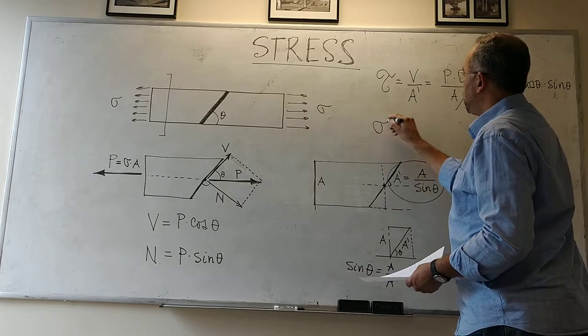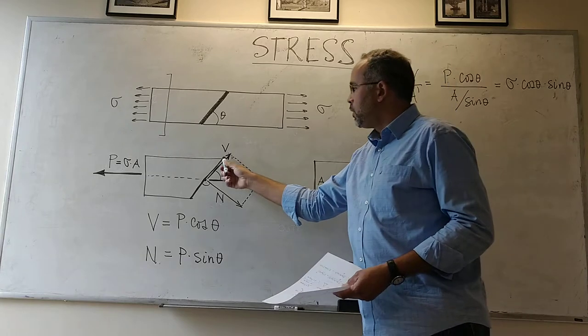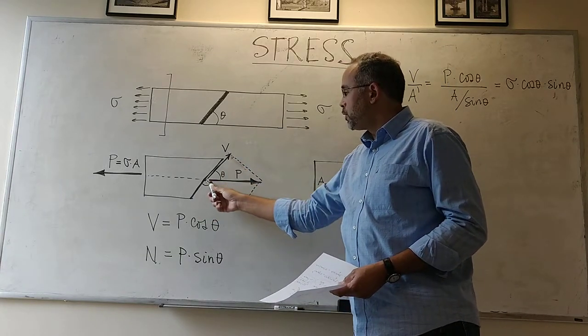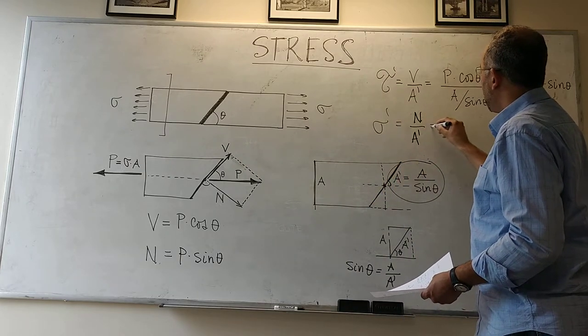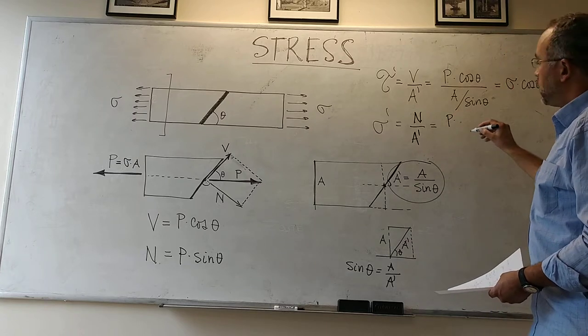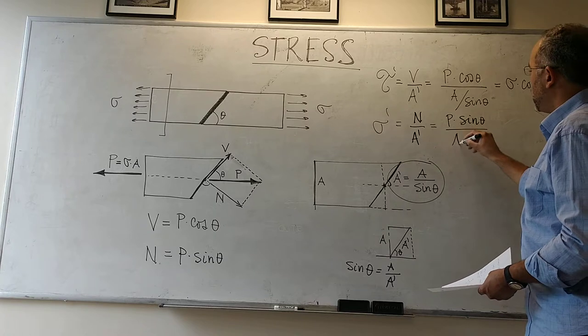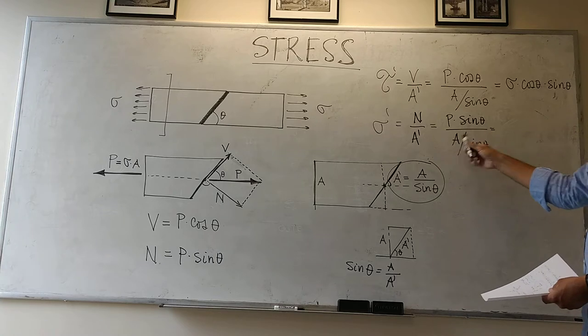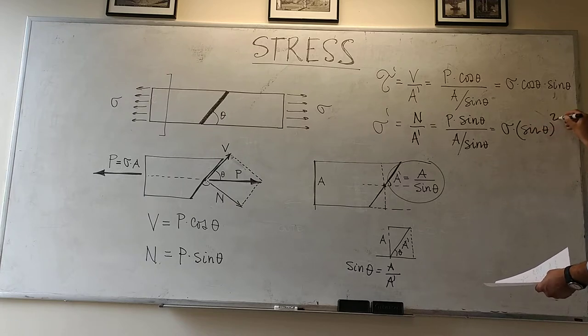In the case of the normal stress acting again on this surface, so that's the surface perpendicular to N, it's going to be N divided by a prime, which is P times sine of theta divided by a divided by sine of theta, which comes out to P over a again, sigma times sine of theta squared.